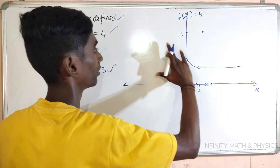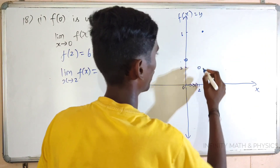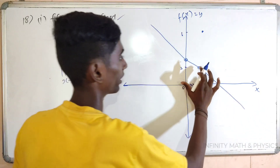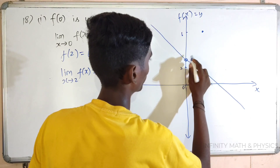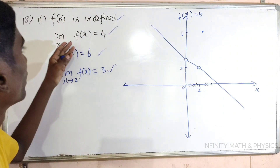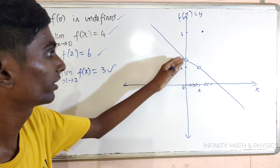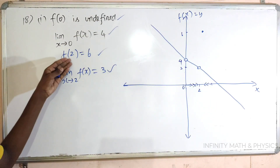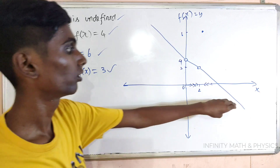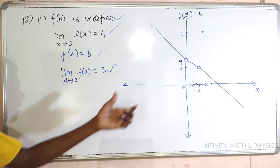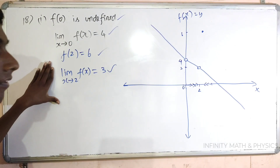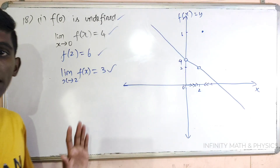Let's try this. Because you don't have the exact function, you can't tell exactly. This is a function. You can check the condition: f of 0 undefined, limit when x tends to 0 of f(x) is equal to 4 — it's 4. f of 2 is equal to 6 — defined. Limit when x tends to 2, f of x is equal to 3 — left side and right side, it's 3. That's all, it's simple.